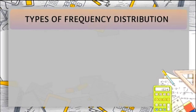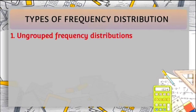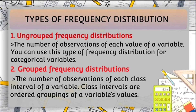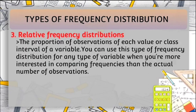Frequency distributions have four types. The first one is ungrouped frequency distribution — it is the number of observations of each value of a variable. You can use this type for categorical variables. The second type is grouped frequency distribution — it is the number of observations of each class interval of a variable. Class intervals are the ordered groupings of a variable's values. The third type is relative frequency distribution — it is the proportion of observations of each value or class interval of a variable. You can use this type when you are more interested in comparing frequencies than the actual number of observations.